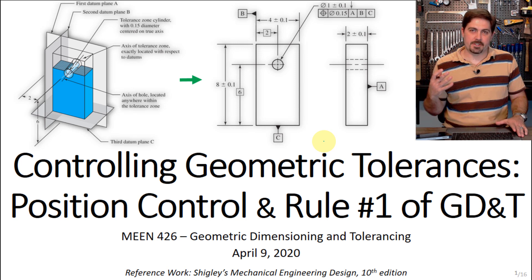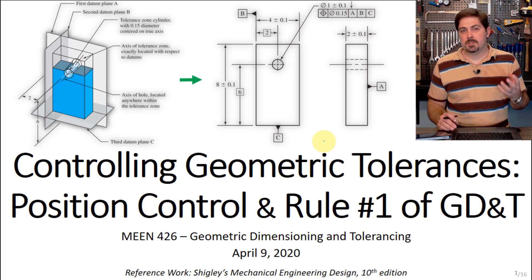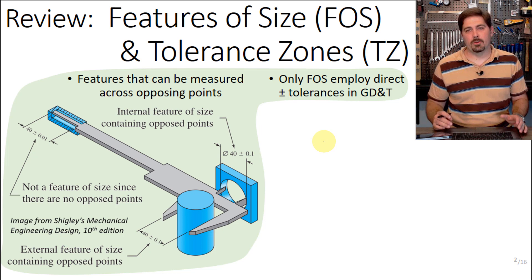Hi, I'm glad you've chosen to join us for this third installment of the series on geometric dimensioning and tolerancing. Today we're going to cover controlling geometric tolerances and look at our first of those controls — position control. We'll also look at something called Rule One of GD&T, but before we get started we need to review a couple of ideas touched on in a previous video.